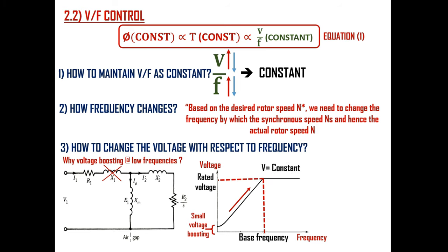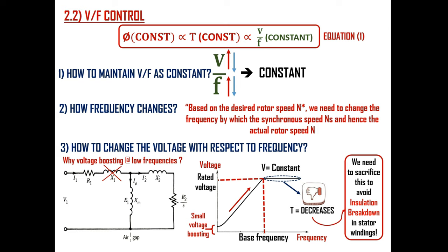Usually the voltage applied to the induction motor should not increase beyond the rated voltage to avoid insulation breakdown in the stator windings. So beyond the rated voltage or base frequency, the voltage will be maintained constant. We cannot maintain the V/F ratio as constant in this region, and hence the maximum available torque decreases with increase in frequency. Whenever we are operating beyond the rated voltage, we need to sacrifice maximum available torque to avoid insulation breakdown.